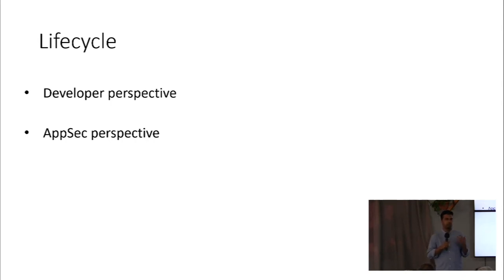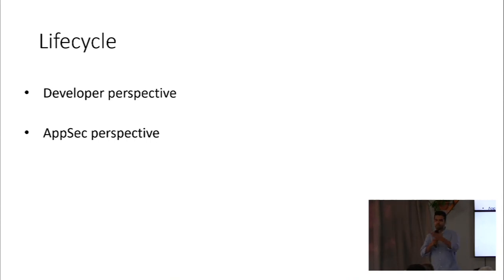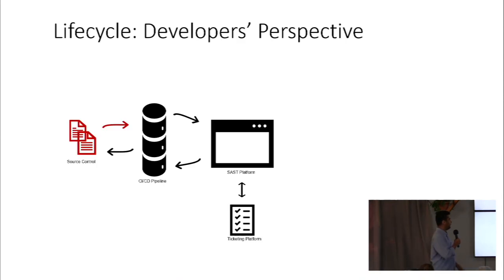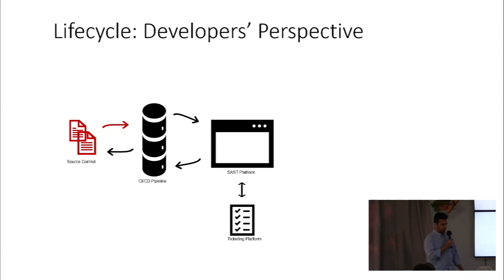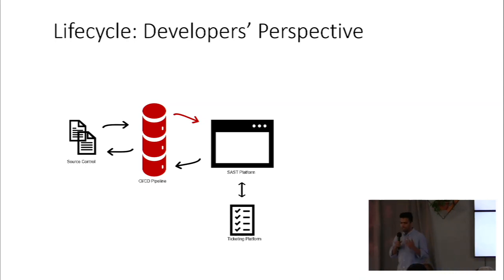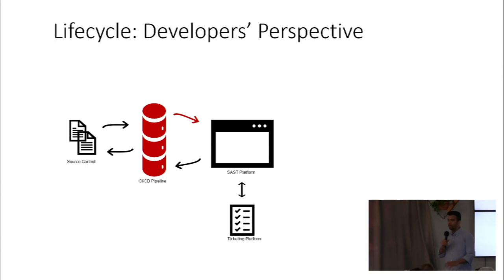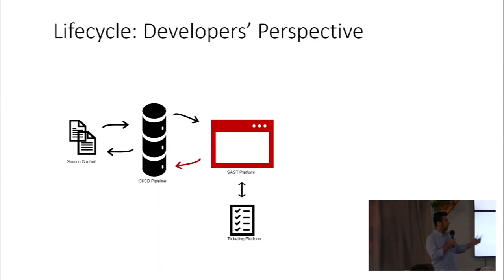I'll go through the lifecycle from both a developer and AppSec perspective. It's important to think from the developer perspective — the less friction there is to use the tool, the more adoption you'll get. If you rule with an iron fist and say 'you have to use this,' they might resist because it doesn't fit their existing system. From a developer perspective, everything starts at source control. The process begins when a new PR is put up — because that's the best place to do it. The request comes into the CI/CD pipeline.